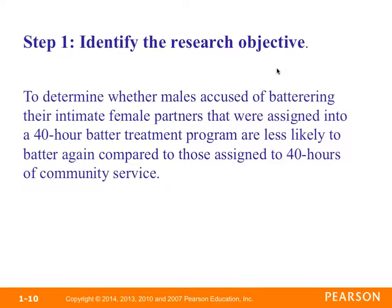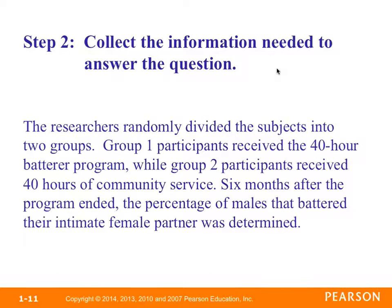Step one — identify the research objectives. The research objective is to determine whether males accused of battering their intimate female partners assigned to a 40-hour batterer treatment program are less likely to batter again compared to those assigned to 40 hours of community service. Step two — collect the information needed. Researchers randomly assigned subjects into two groups: group one entered the 40-hour batterer program, group two received 40 hours of community service, and then six months after the program ended, the percentage of males who battered again was determined.